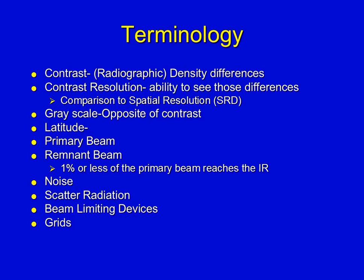Noise is any random fluctuation of densities on the image receptor. We have two types: fog, which is scatter radiation, and quantum mottle. This chapter deals primarily with scatter radiation and the fog type of noise; quantum mottle was covered in the last section.